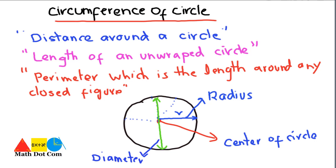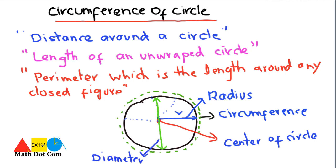Now the one thing left is the circumference. I'll draw the circumference in a dotted line so you can easily understand it. The circumference is the distance around a circle — as we go around the circle, this green dotted line represents the circumference. If we unfold it and calculate its length, that gives us the length of the circle. So the circumference is the perimeter or length of the circle, alongside the radius, diameter, and center as parts of the circle.